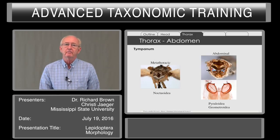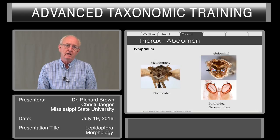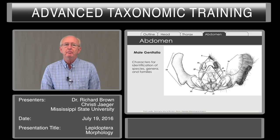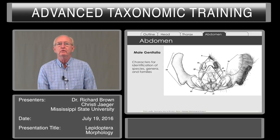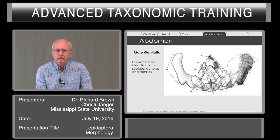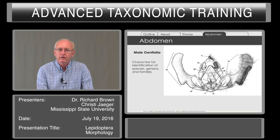A tympanum can be found on the metathorax in the Noctuoidea, whereas in two other superfamilies it's on the abdomen. The abdomen, of course, includes the male genitalia, which are especially important for species recognition but also for identifying genera as well as families.